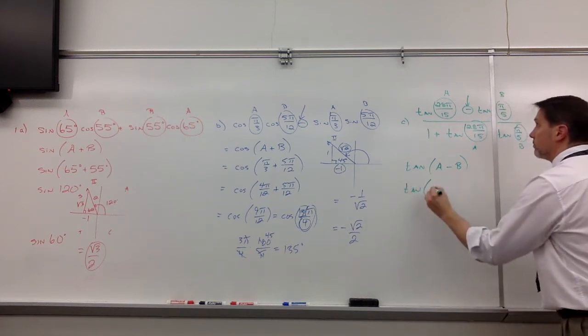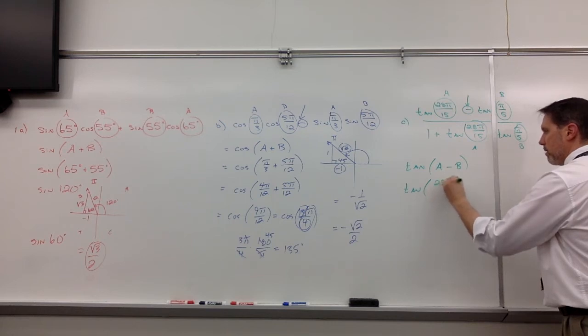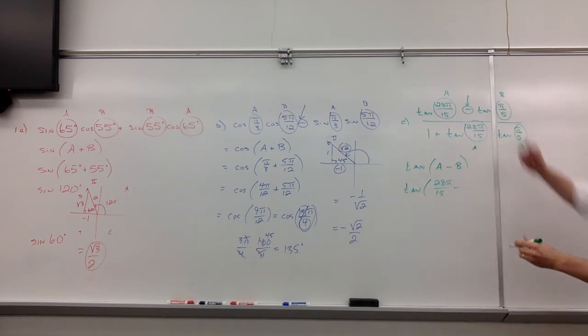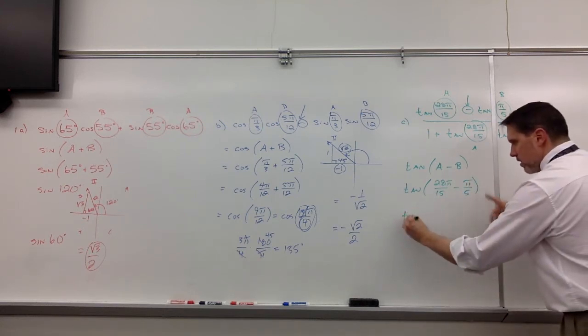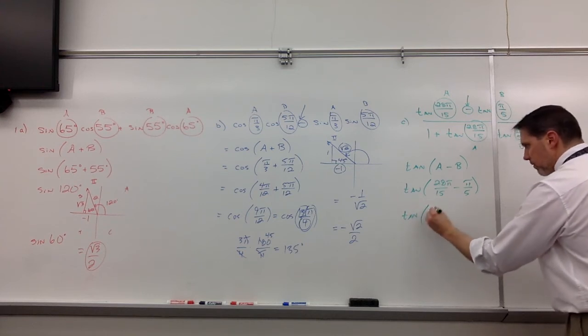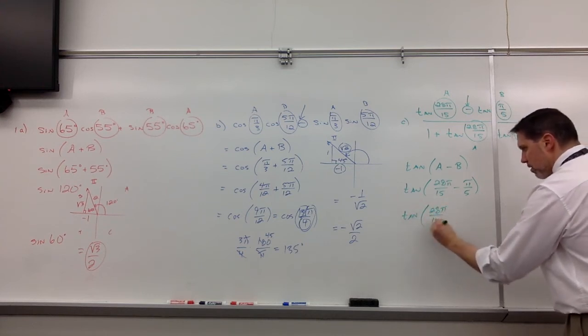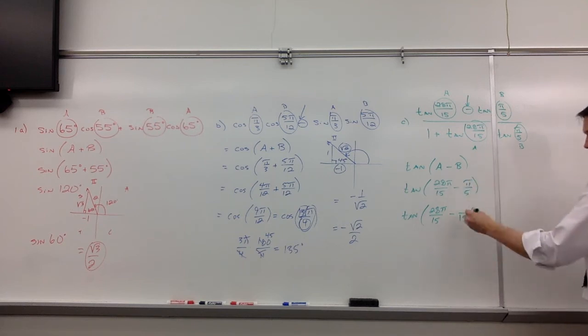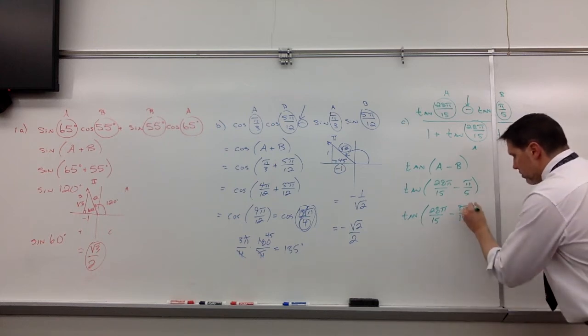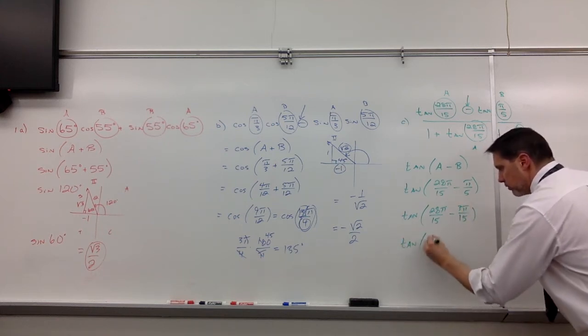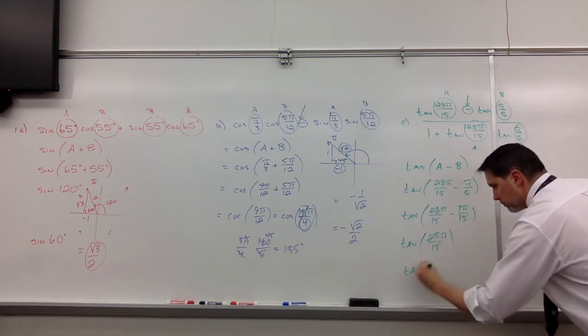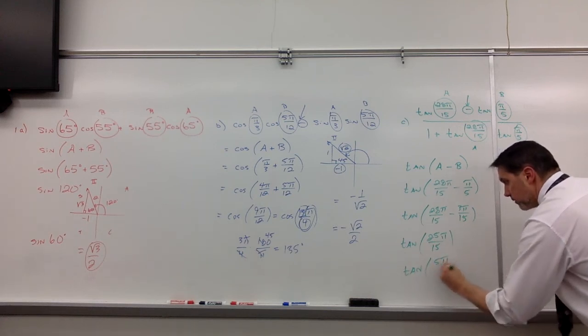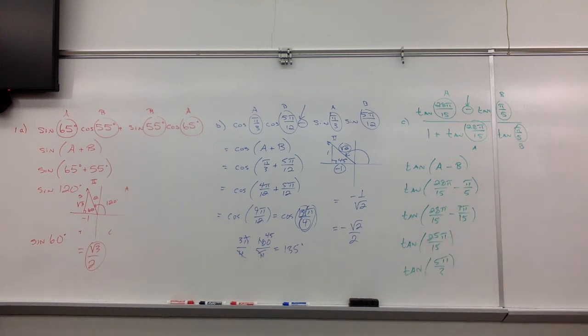All right. So tangent A minus B, in this case, the A is 28π/15, and the B is π/5. So again, getting common denominators, we would say this is tangent of 28π/15 minus 3π/15. Subtract, you get 25π/15, or in lowest terms, would be 5π/3.